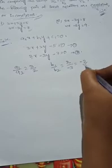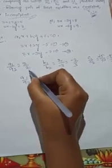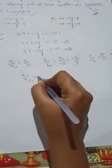Now comparing the ratios. A1 by A2: the x-coefficients are 3 and 2, so A1 by A2 equals 3 by 2. B1 by B2: the y-coefficients are 2 and minus 3, so B1 by B2 equals minus 2 by 3. C1 by C2: the constants are minus 5 and minus 7, so minus 5 by minus 7 — the negatives cancel — giving 5 by 7.